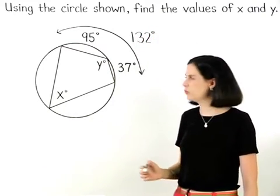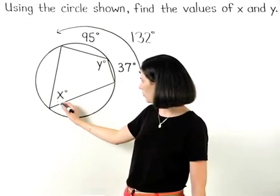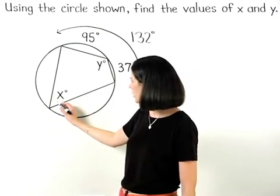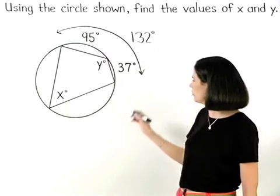So x, which represents the measure of the inscribed angle, equals one-half times 132.